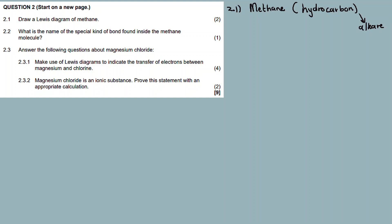Alkanes — methane contains hydrogen atoms and carbon atoms. It's a hydrocarbon molecule.